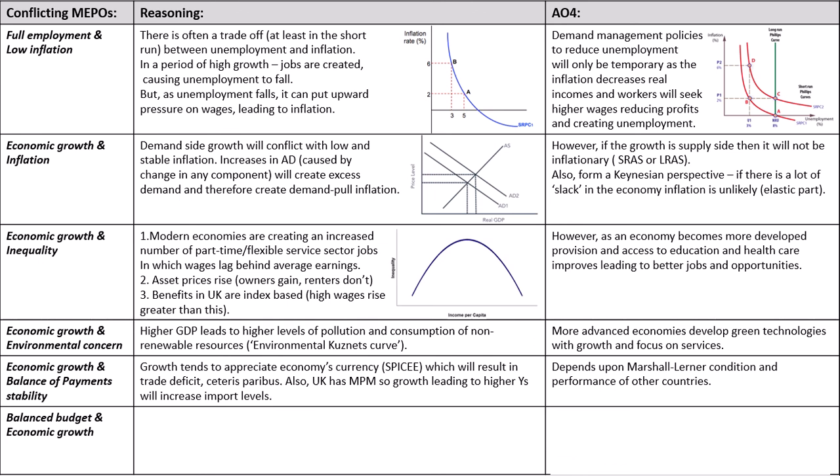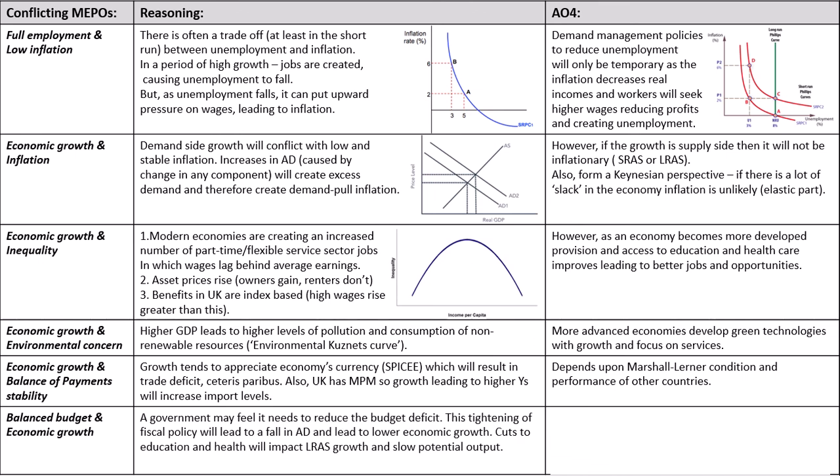Final one: why does trying to balance the budget — i.e. reduce the deficit — conflict with economic growth? Hopefully you've got that this is basically an austerity measure. Making cuts to the deficit to balance the books and potentially achieve a budget surplus would involve tightening fiscal policy — cutting government spending and perhaps increasing taxes — which will obviously have a negative impact on AD, shifting it inwards and leading to lower growth. Cuts to education and health also have a detrimental impact on the productive potential of the economy, i.e. the LRAS.